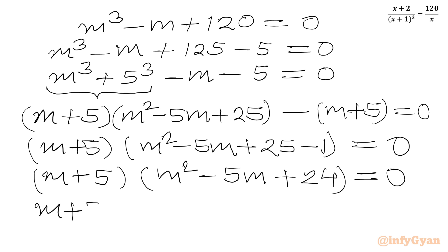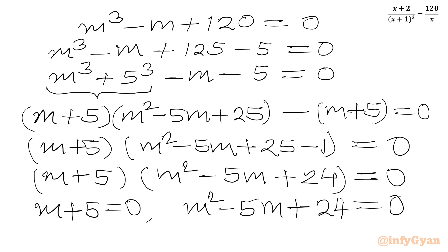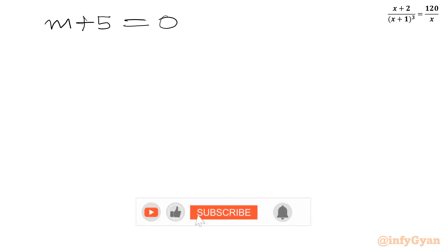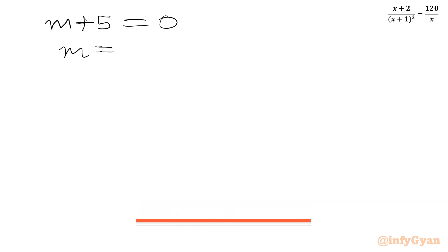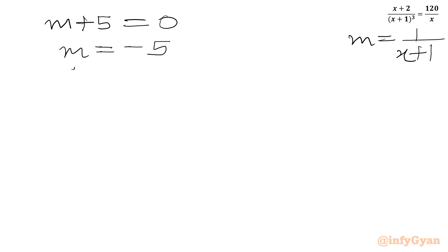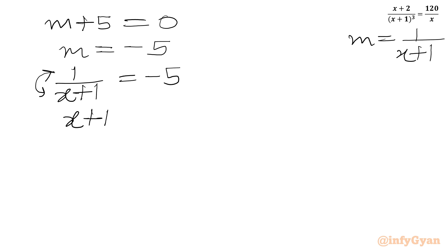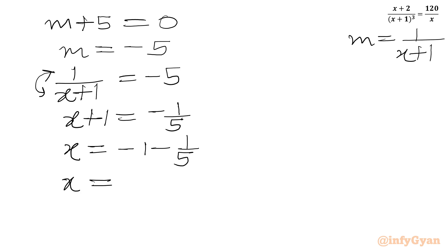So we conclude m + 5 = 0 or m² − 5m + 24 = 0. From m + 5 = 0 we get m = −5. Since m = 1/(x + 1), we write 1/(x + 1) = −5, take reciprocals to get x + 1 = −1/5, then subtract 1: x = −1/5 − 1 = −6/5. This is our first real solution.